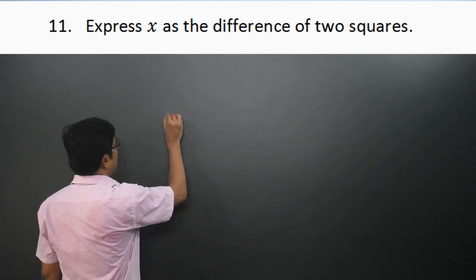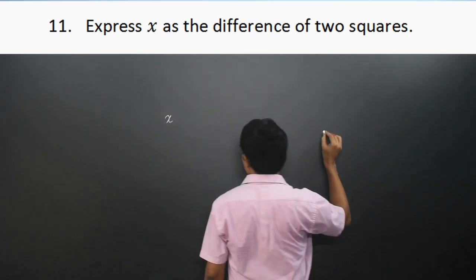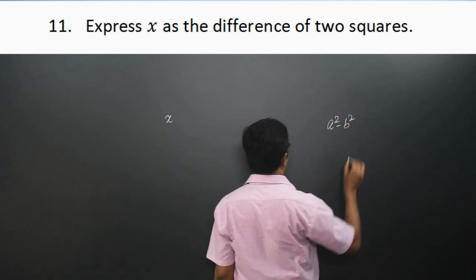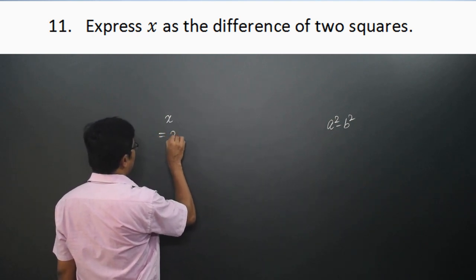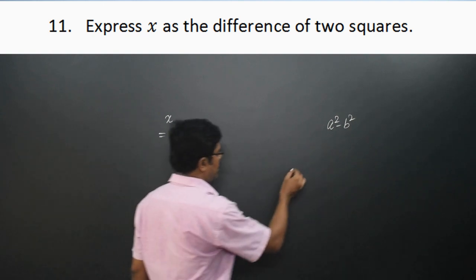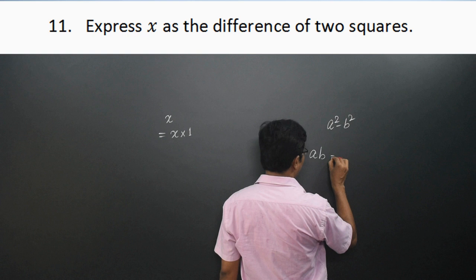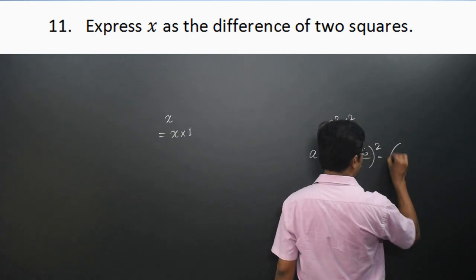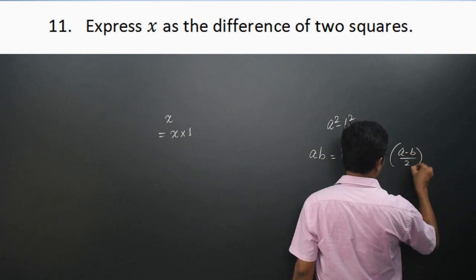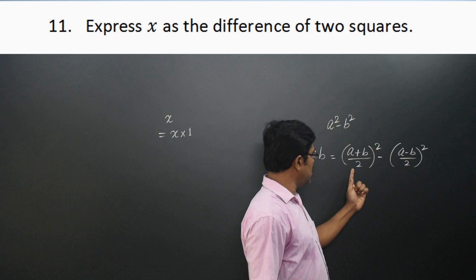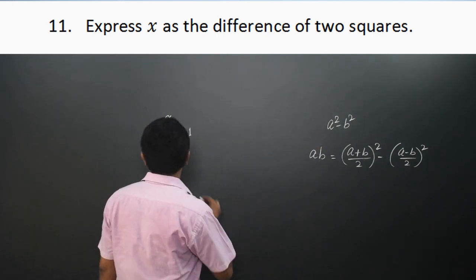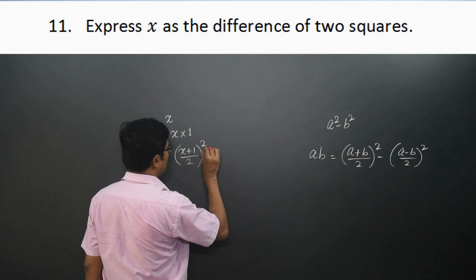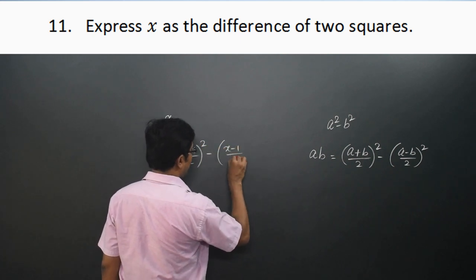Here we are asked to express x as the difference of 2 squares, that is, in the form A² − B². x can be written as x × 1, so it becomes of the form AB. We know AB = [(A + B)/2]² − [(A − B)/2]², which is the difference of 2 squares. So x can be written as [(x + 1)/2]² − [(x − 1)/2]².